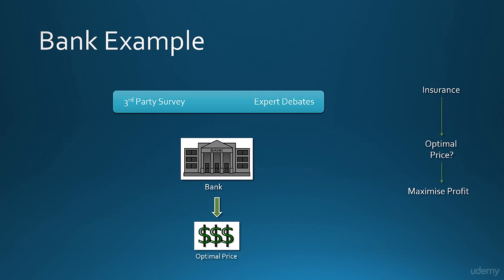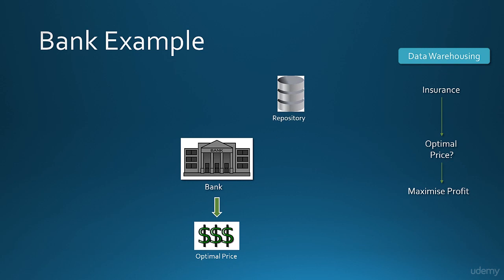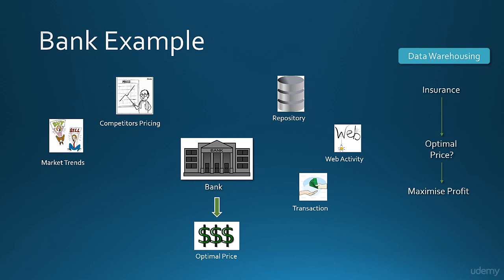This accuracy was improved with the advent of data warehousing technologies. Organizations realized there is a lot of data around them which could help find the optimal price. For example, they had mainframe databases with lots of customer and activity-related information. Their website web logs could show what products people were showing interest in. They had transaction logs giving a peek into spending patterns of customers. They could also look outside at competitors' pricing, market trend surveys, and third-party statistics on accident probabilities and claim rates in an area.